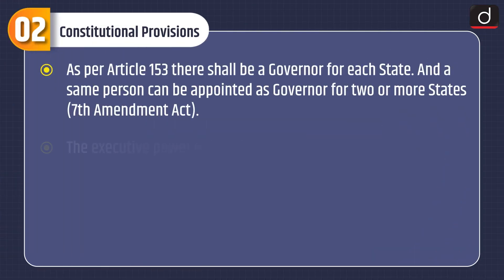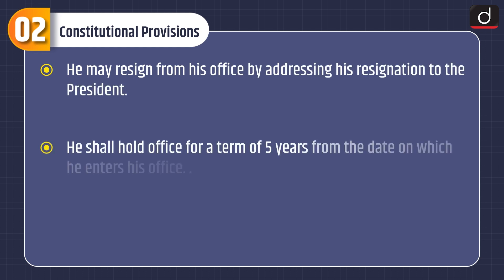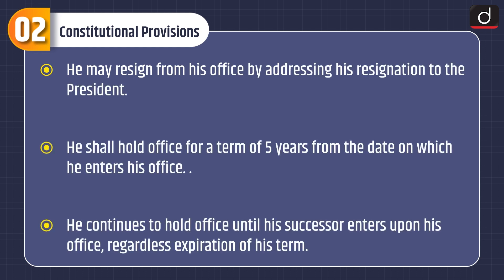Moving on to the constitutional provisions. As per Article 153, there shall be a governor for each state and the same person can be appointed as governor for two or more states under the Seventh Amendment Act. The executive power of the state shall be vested in the governor. The governor is appointed by the president and shall hold office during the pleasure of the president. He may resign by addressing his resignation to the president. He shall hold office for a term of five years and continues until his successor enters upon his office, regardless of expiration of his term.